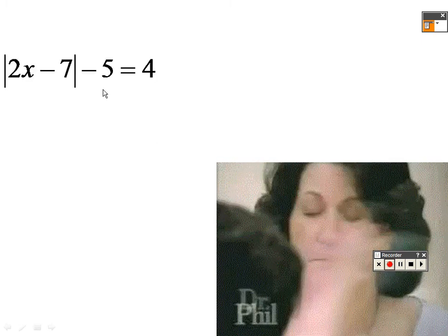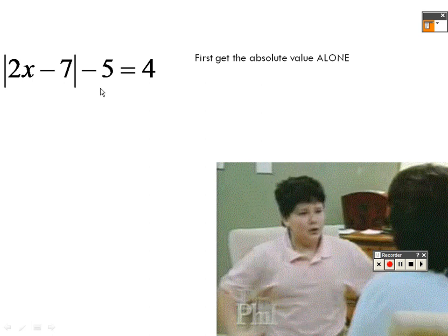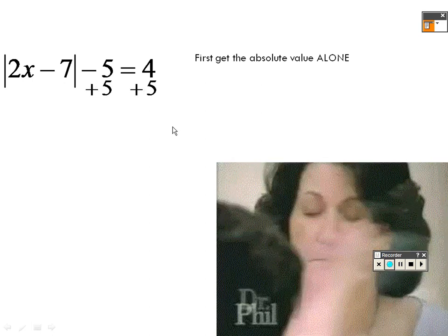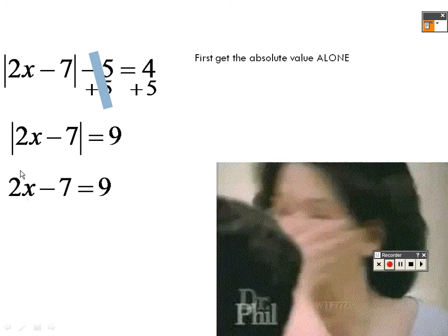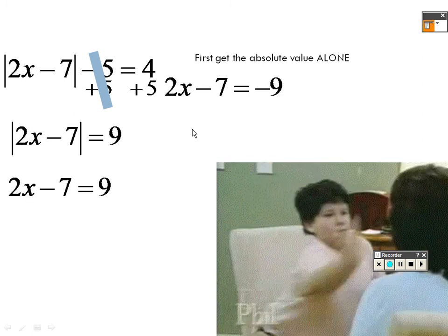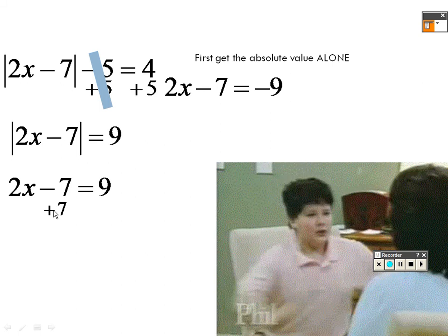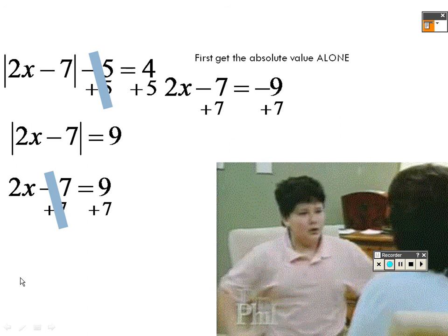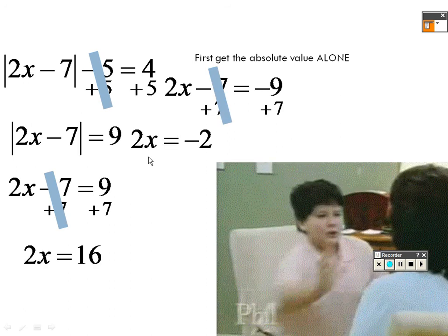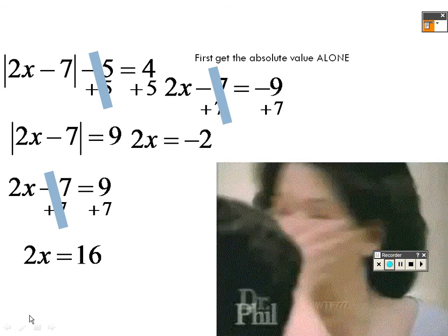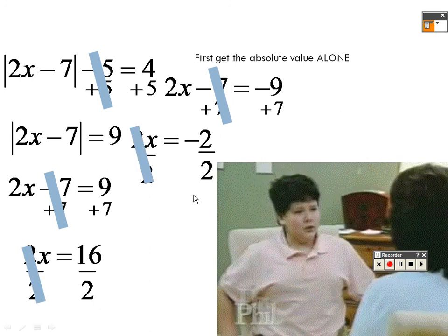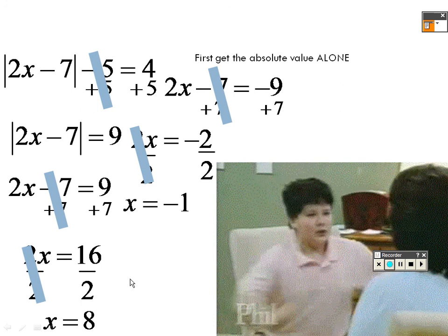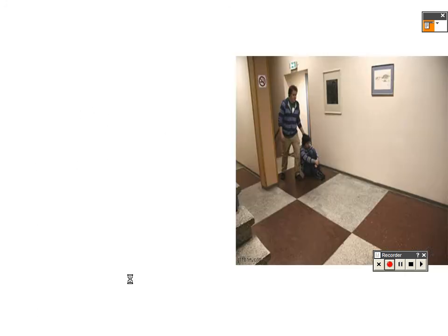For this one, you have to get the absolute value alone, so add 5 to get the absolute value of (2x minus 7) equals 9. Write down exactly what you got and then write it with the negative. Adding 7 to both sides gives 2x equals 16 on one side and 2x equals negative 2 on the other. Dividing both sides by 2 gives x equals 8 and x equals negative 1. Simple equations — just remember the rules.